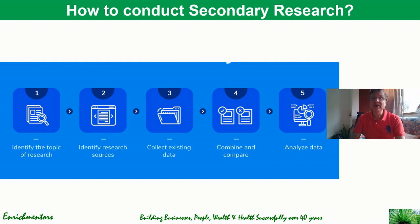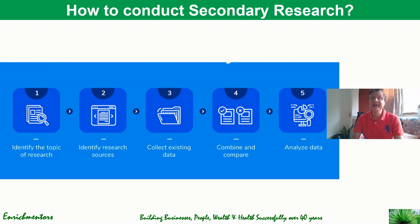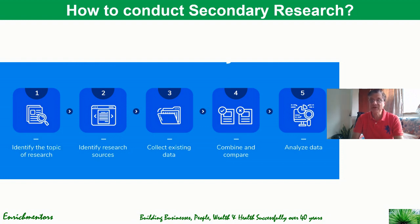Let's look at how to conduct secondary research. We have laid out a five-step process. First, identify the topic of research — what subject do you want to get trends on. Second, identify where you should go, because sources are critical; there are multiple sources on the internet and some may not be credible or have expertise, so establish the credibility of resources and only go to sources you can trust. Third, collect existing data from those sources. Fourth, combine, compare, and analyze the data. The most important step is identifying the right research sources — companies with credibility whose data has proven to be right.